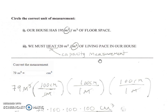So there's a difference. Area is more floor space. Volume is a capacity measurement.